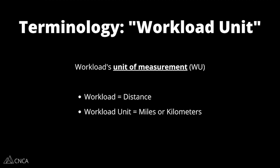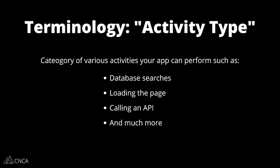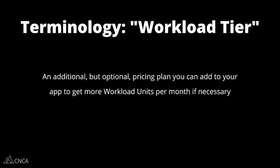Every Bubble plan comes with a certain number of workload units per month. Activity type refers to the 12 types of activity that contribute to your app's workload. These include things like database changes, page load, searching the database, communicating with APIs, and more. Workload tier is the level of your plan — every Bubble plan comes with a certain amount of allowed workload units. If your app needs more, you can either upgrade to a higher plan or add on an additional workload tier, which is a separate plan that gives you more workload units. Not every app necessarily needs an additional workload tier.